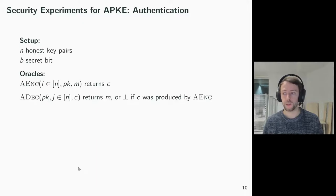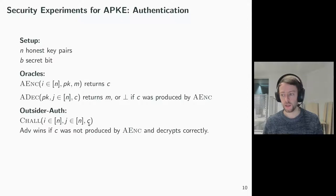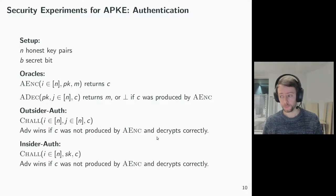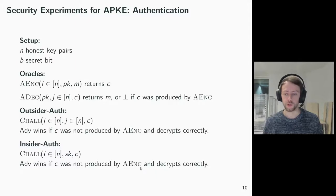For authentication, the setup and the encryption and decryption oracles are the same. For the outsider-out security notion, we let the adversary choose indices for honest sender and receiver key pairs and submit a ciphertext. The adversary wins if the ciphertext was not produced by the encryption oracle and it decrypts correctly for the chosen key pair. For insider-out, the adversary chooses an honest sender key pair and an arbitrary receiver secret key. It submits a ciphertext and wins if the ciphertext was not produced by the encryption oracle and decrypts correctly under the submitted key pair.